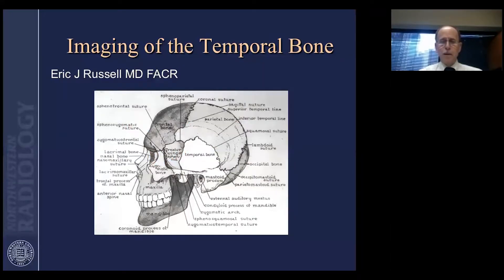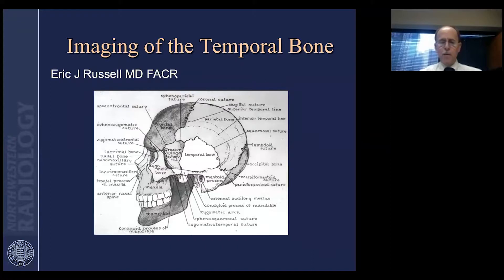Everybody's familiar with the place that the temporal bone takes within the skull. There are various parts of the temporal bone: a broad thin squamosal portion that forms part of the lateral calvarium, articulating with the greater wing of the sphenoid and the parietal bone. There's a mastoid process containing the mastoid air cells, a zygomatic process forming the back part of the zygomatic arch, and the part we're going to talk about today — the petrous pyramid — which you really can't see well on the lateral view of the skull.